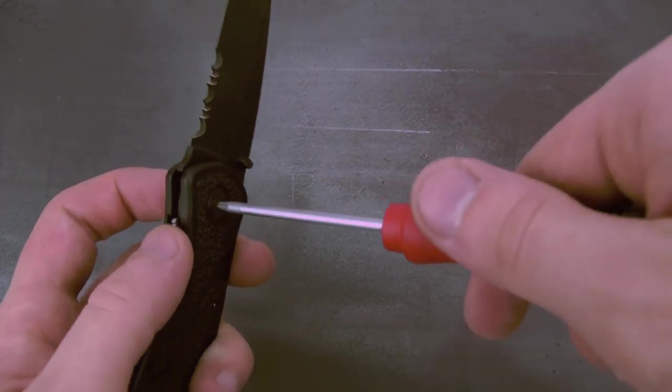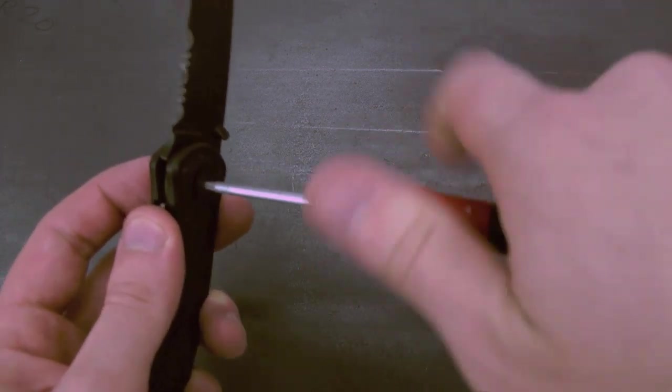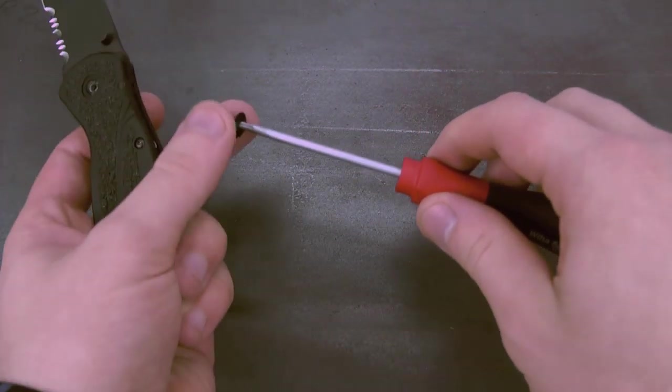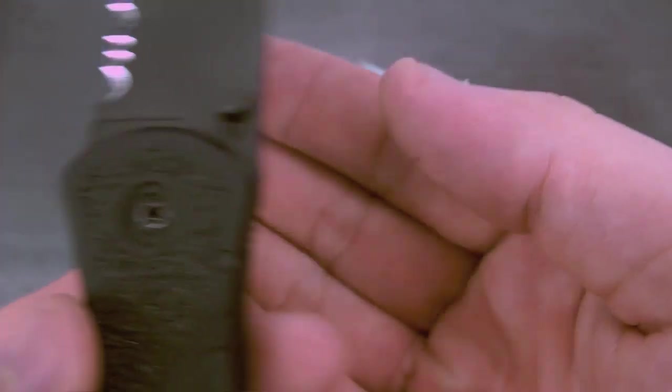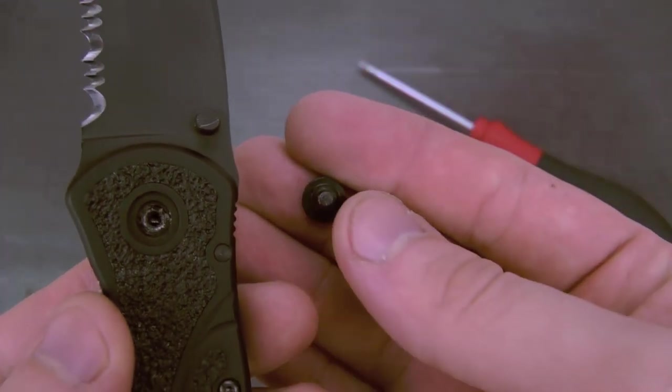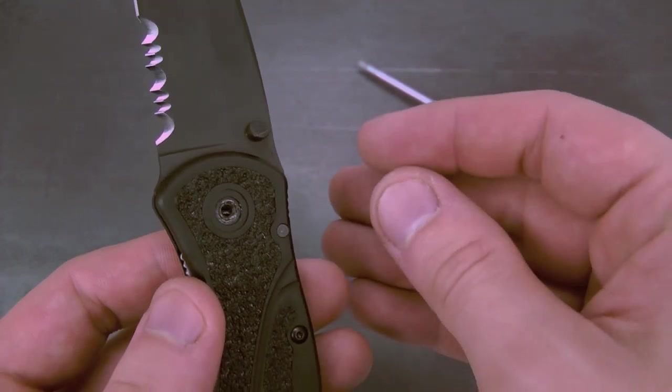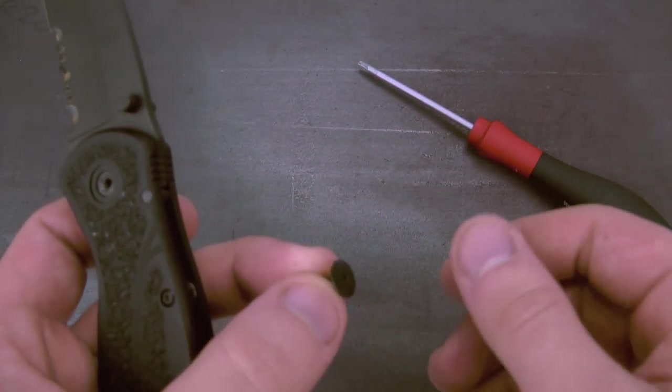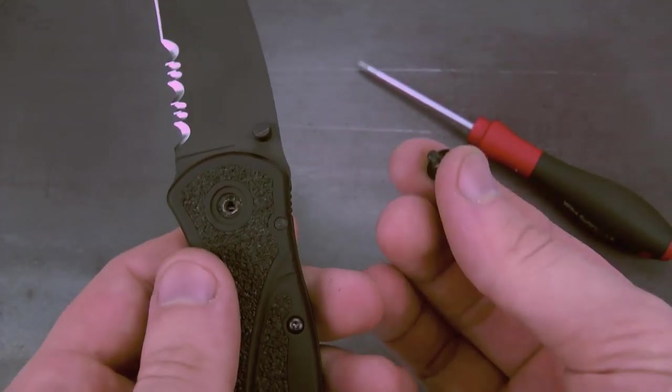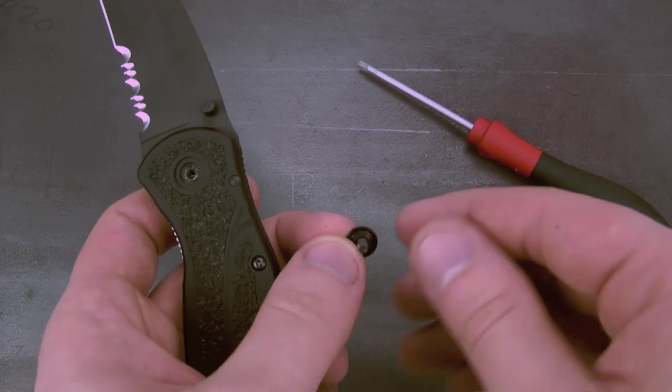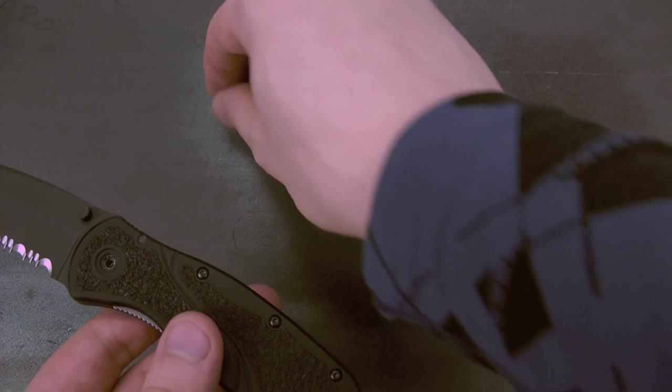Anyway, to start, we're going to take out the pivot screw with the Torx T8 driver. Now, you may be wondering what is that stuff inside there? That is actually Loctite, blue Loctite, that's what we use. And that's to make sure that screws don't back out. Generally, it's a good idea to put a tiny drop of blue Loctite back on the screw when you screw it back in. But it's not really necessary because we put some in there and generally it'll last there for a little bit.